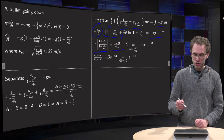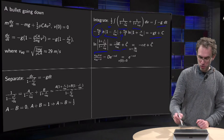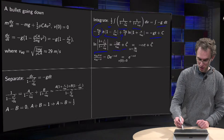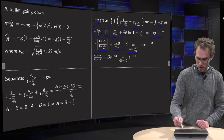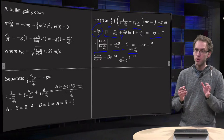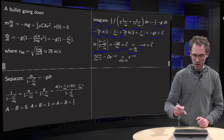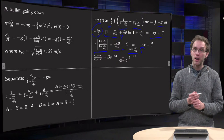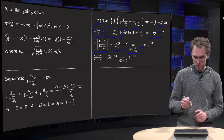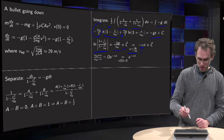We combine both logarithms into one log on the left-hand side, then divide by v_equilibrium and multiply by minus 2 to eliminate this constant. So we get minus 2gt over v_equilibrium and some integration constant. For ease of notation, call the factor in front of t alpha, so alpha equals 2g over v_equilibrium. We want positive alpha, so leave the minus sign.